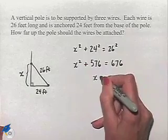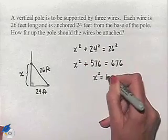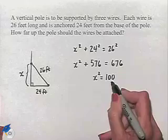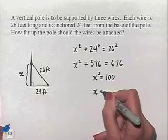Subtracting 576 from both sides of the equation gives us X squared equals 100. And now the number which when squared is 100 is the value 10.